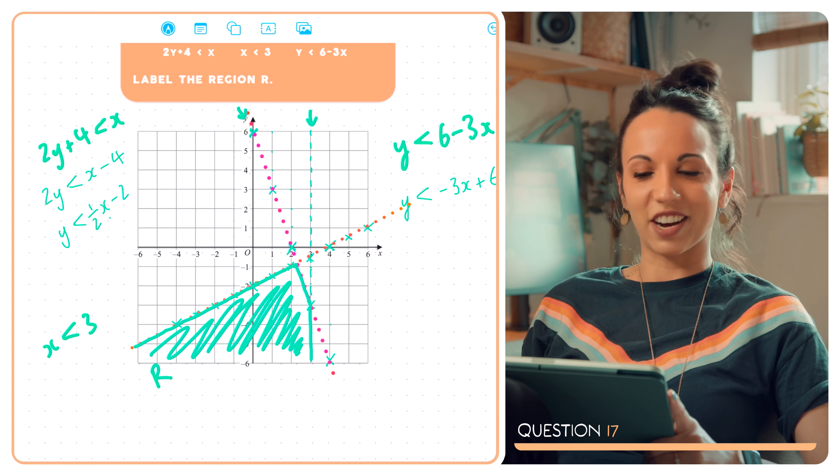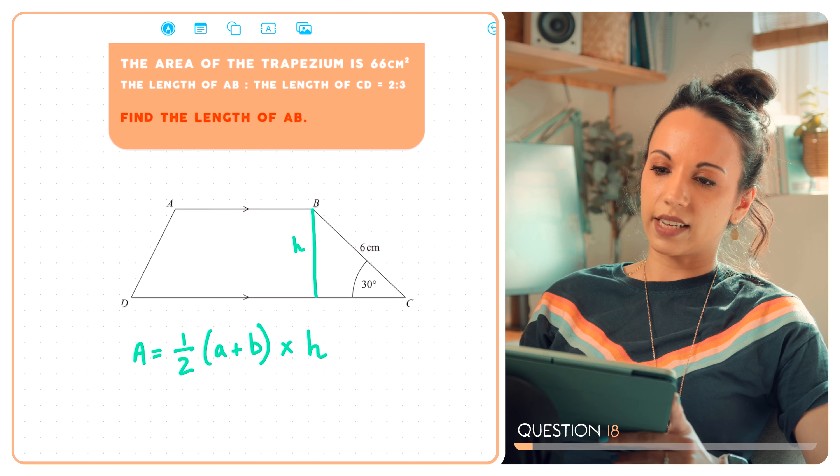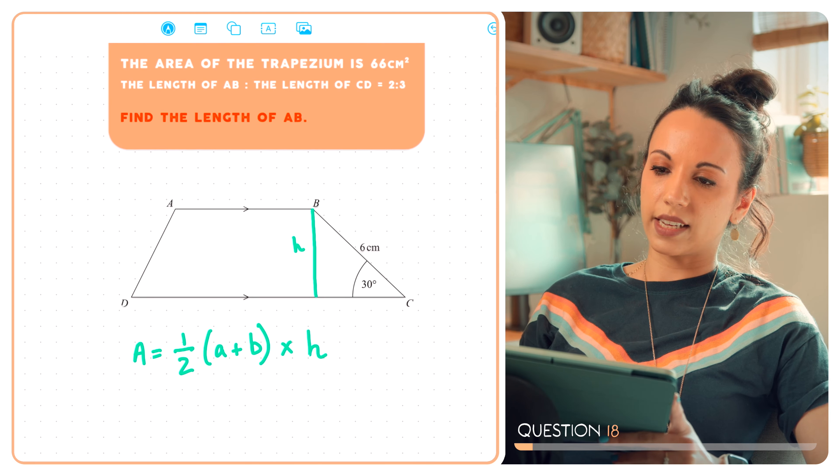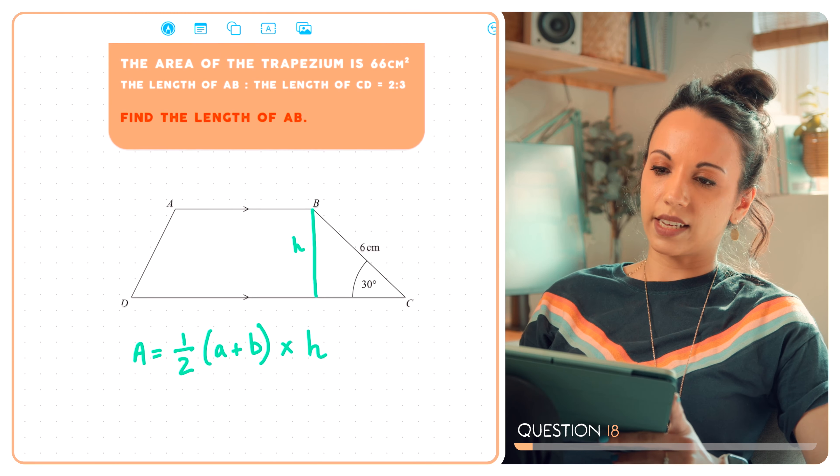Question 18. Here is trapezium ABCD. The area of the trapezium is 66 centimetres squared. The ratio of the length AB to the length CD is 2 to 3. We need to find the length of AB. So we start with the formula for the area of a trapezium: area equals half of the sum of the parallel sides, a and b, multiplied by the perpendicular height h.